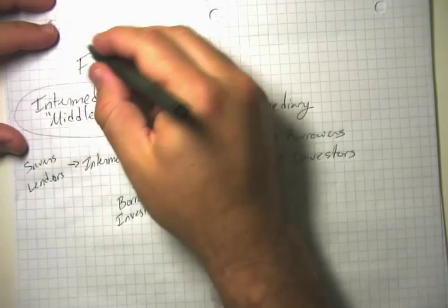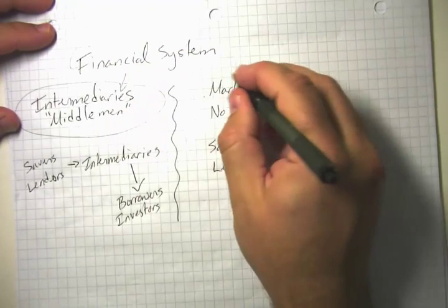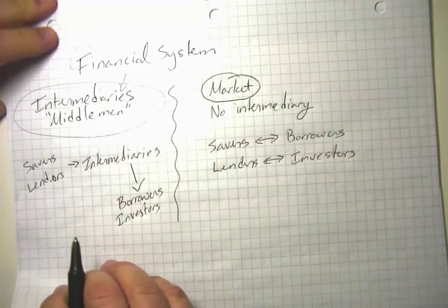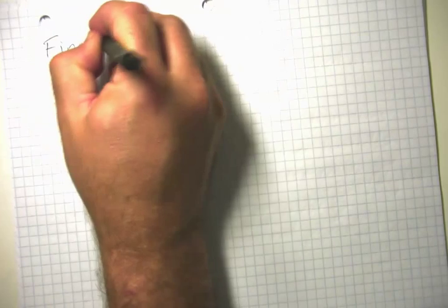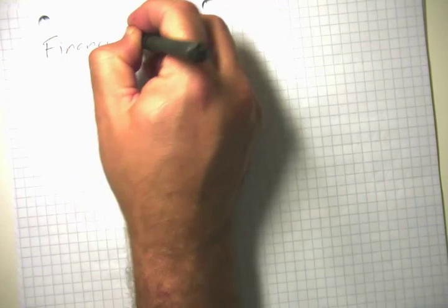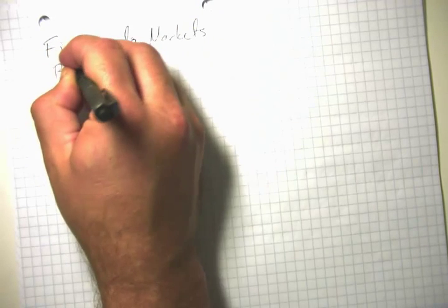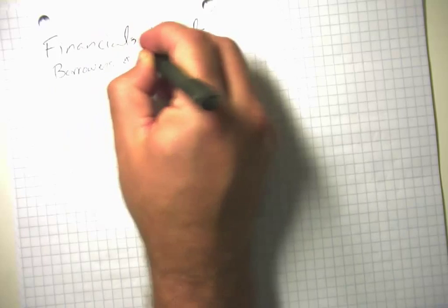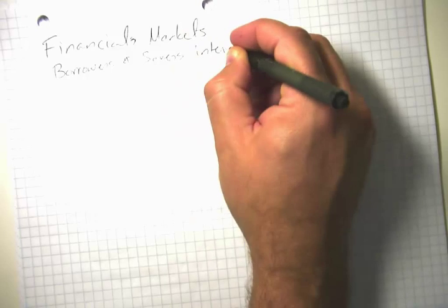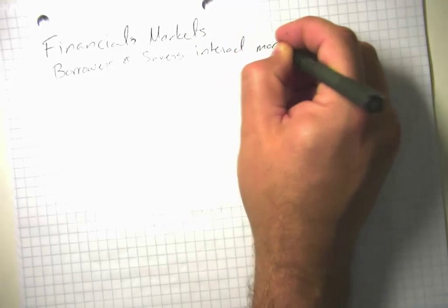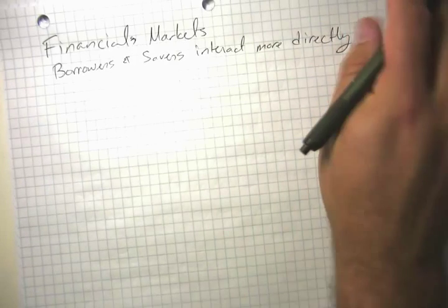We are talking about the financial system. We already talked about financial intermediaries. Now let's go ahead and talk about financial markets. In financial markets, borrowers and savers interact more directly, without as much presence of a middleman or intermediary.